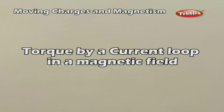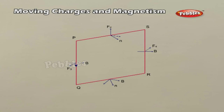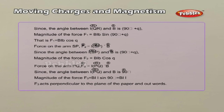Torque on a current loop in a magnetic field. Consider a rectangular loop PQRS of length L and breadth b, which carries a current I along PQRS. The loop is placed in a uniform magnetic field of induction B. Let θ be the angle between the normal to the plane of the loop and the direction of the magnetic field. The forces F₁ and F₂ are equal in magnitude, opposite in direction, and have the same line of action; hence the resultant effect on the loop is zero.